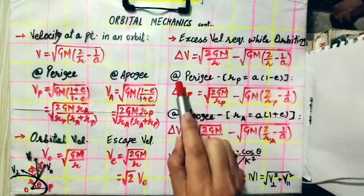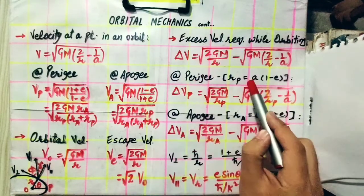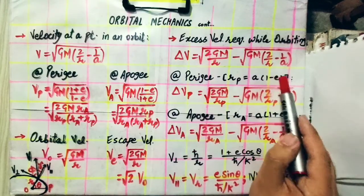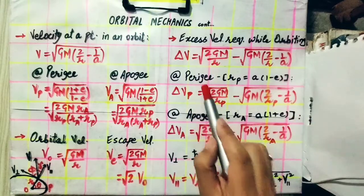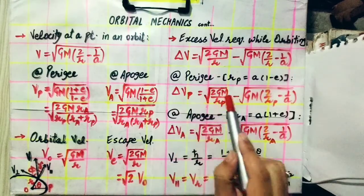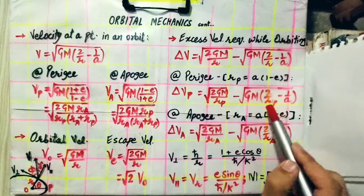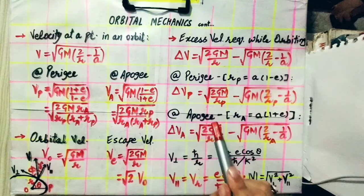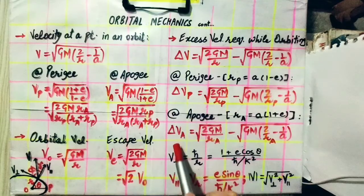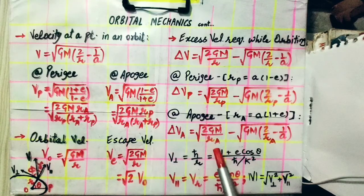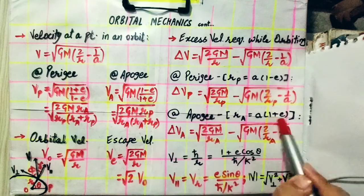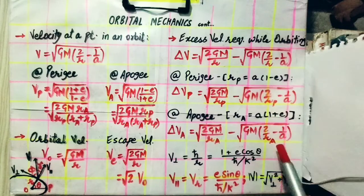Excess velocity required at perigee: for this case, rp equals A into 1 minus e, which we have seen in earlier videos. If we substitute rp here, delta V at perigee will be given by 2GM upon rp minus GM 2 by R minus 1, both in under root. At apogee, the excess velocity will be given in terms of ra like this. You have to just substitute ra in terms of eccentricity if you want to compute it.